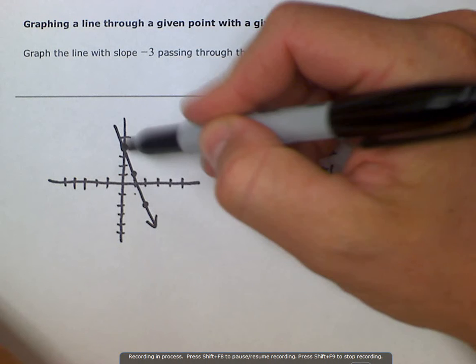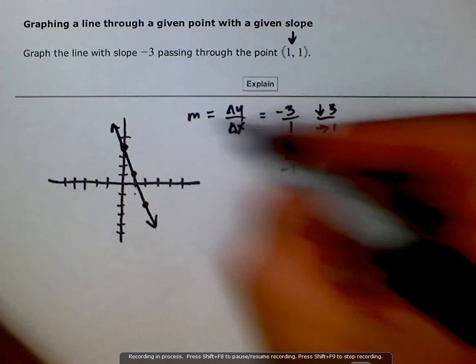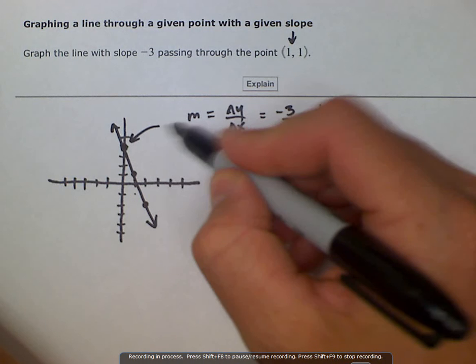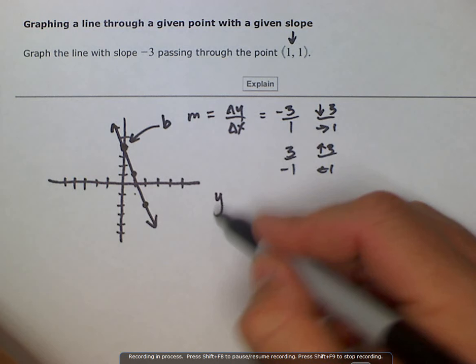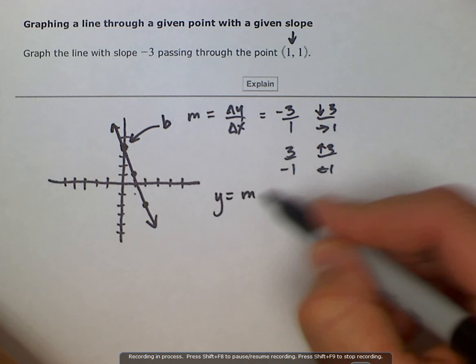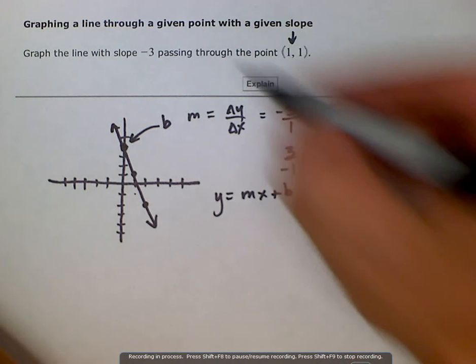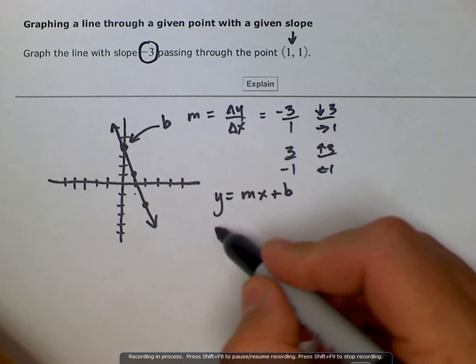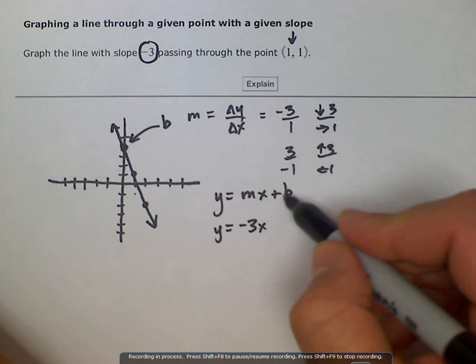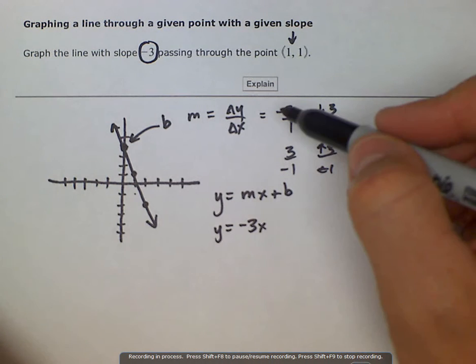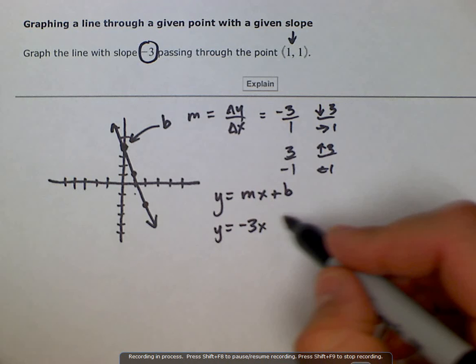And this is what our line looks like, our y-intercept b being positive 4. So we can just plug this right back into our slope-intercept form. We know our slope is a negative 3, so we just go y equals negative 3 times x. And then our y-intercept, we see it crosses at positive 4, would be positive 4.